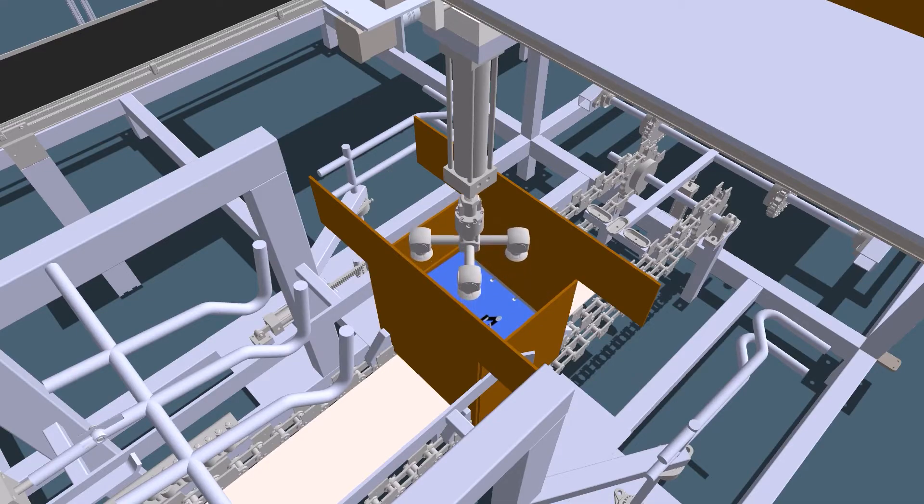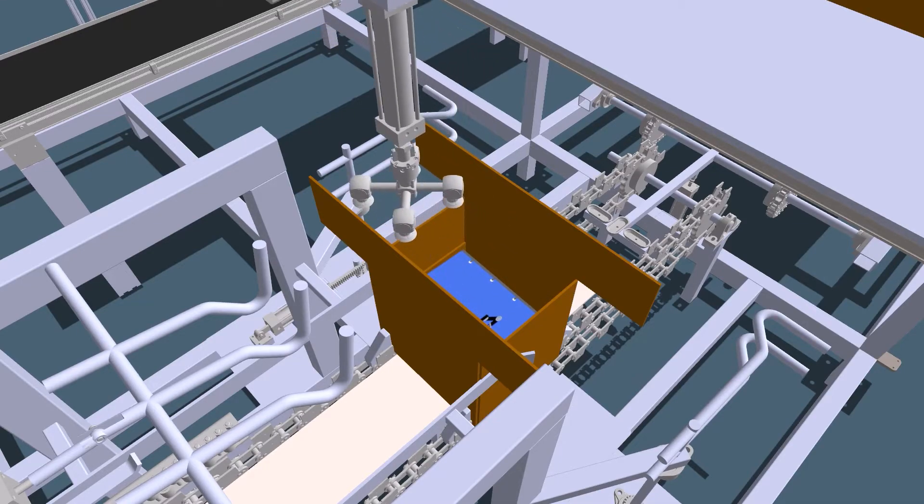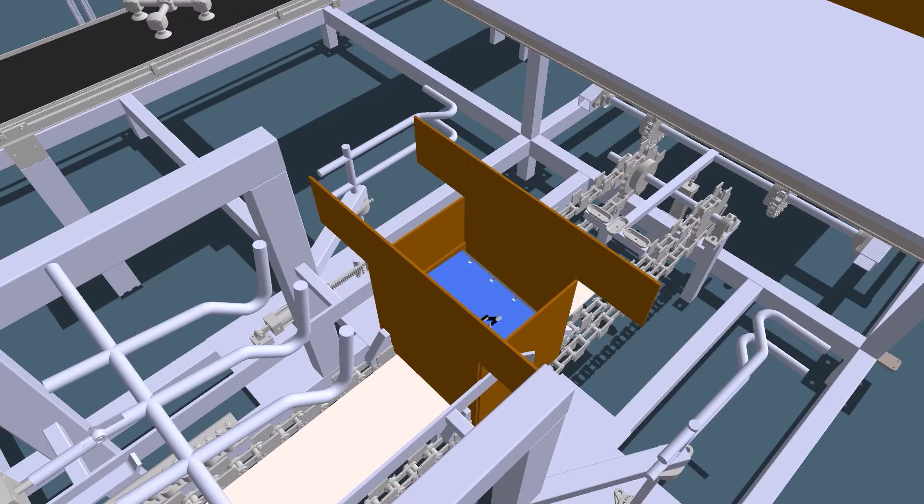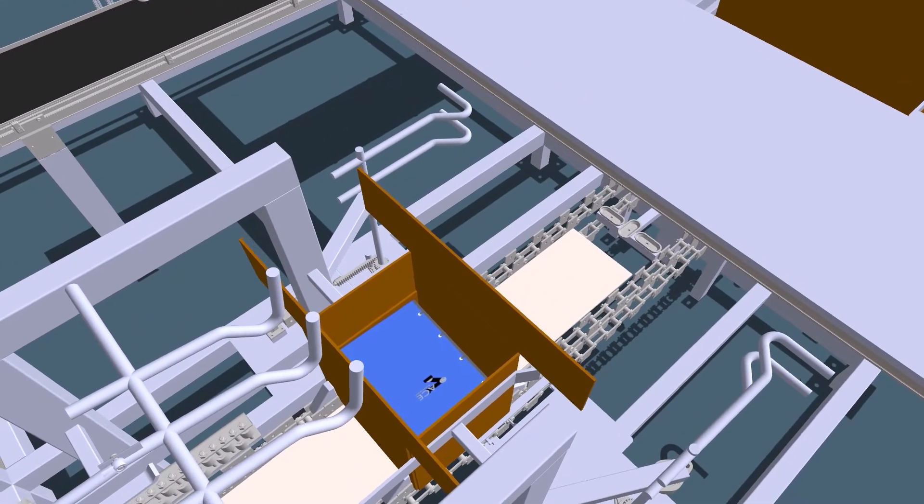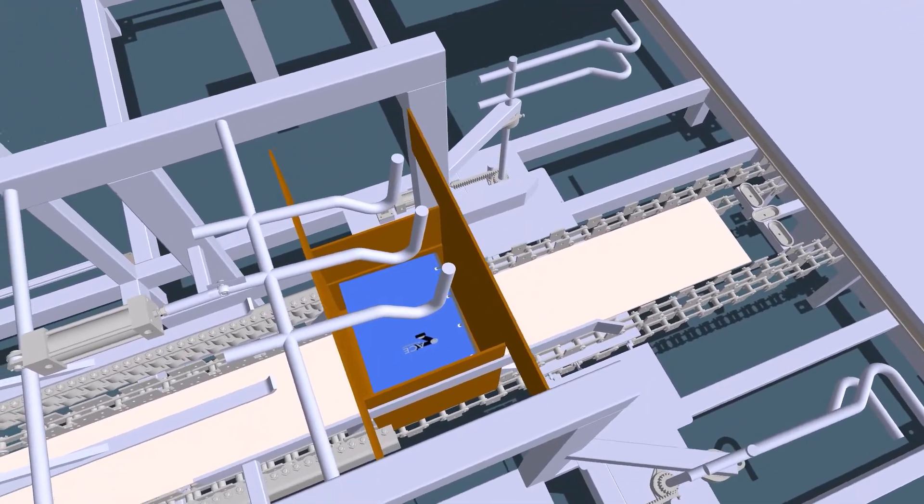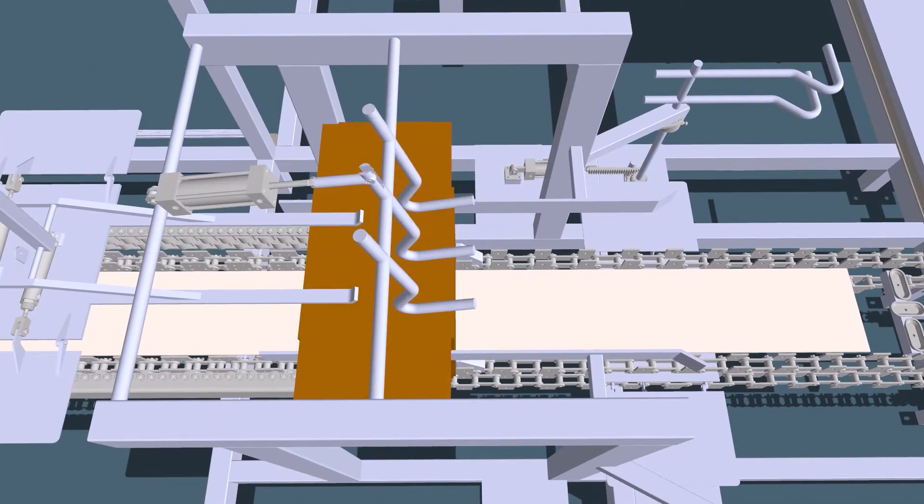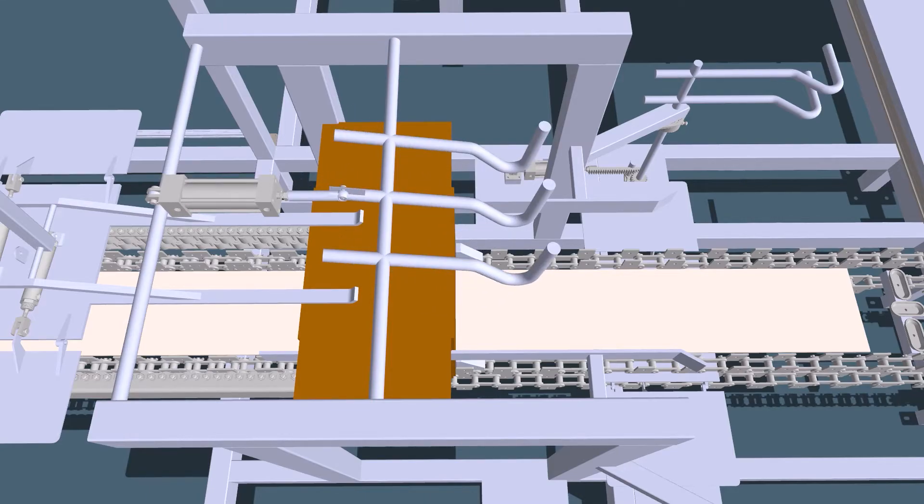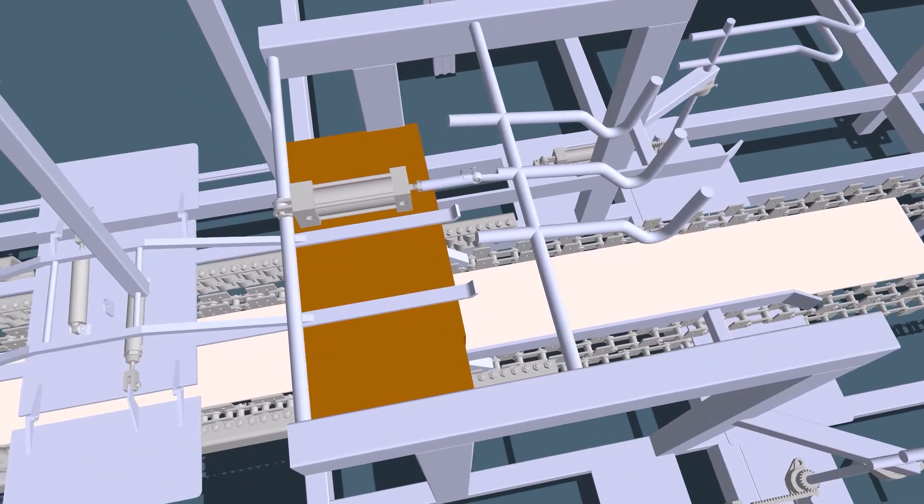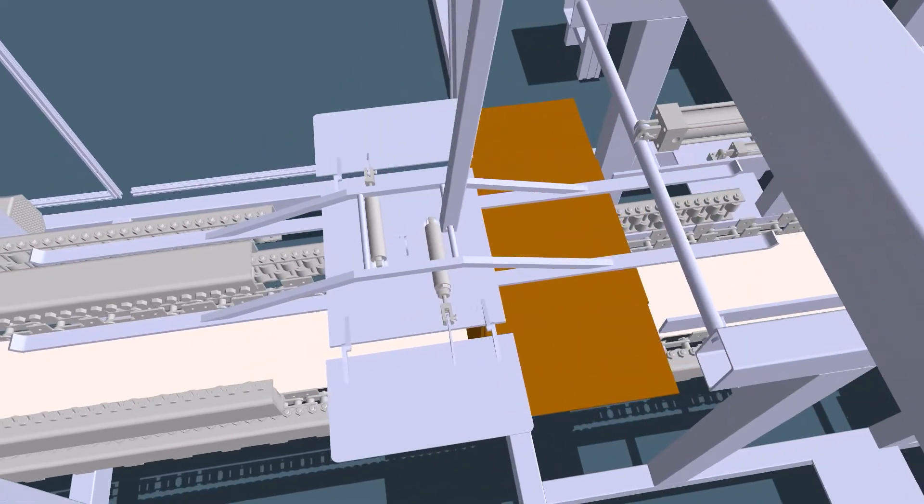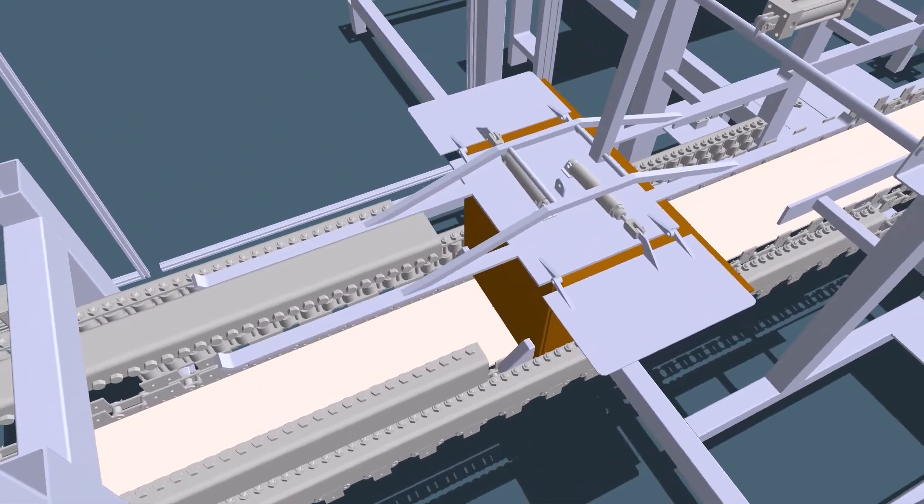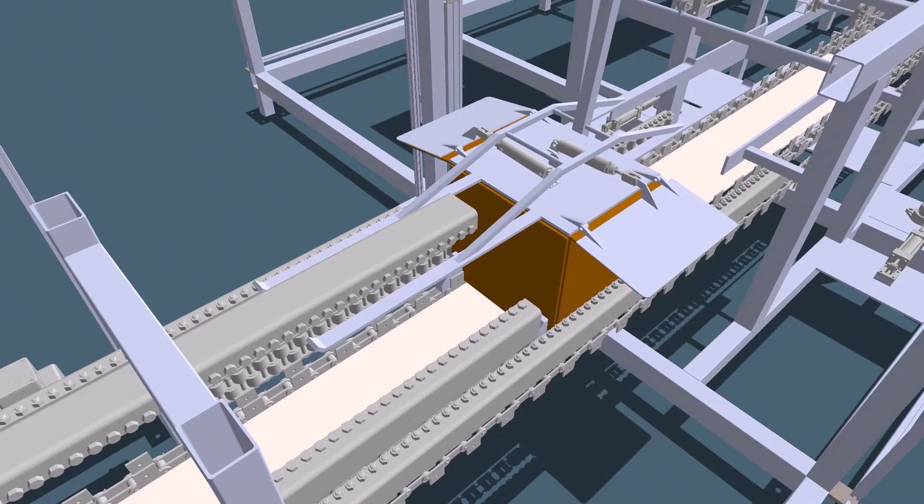Now that the box is full, it is ready to be sealed completely. First, the top flaps are folded down and sealed shut with glue. Pneumatically actuated side plates fold the top flaps of the box down and momentarily hold them in place to ensure complete adhesion.